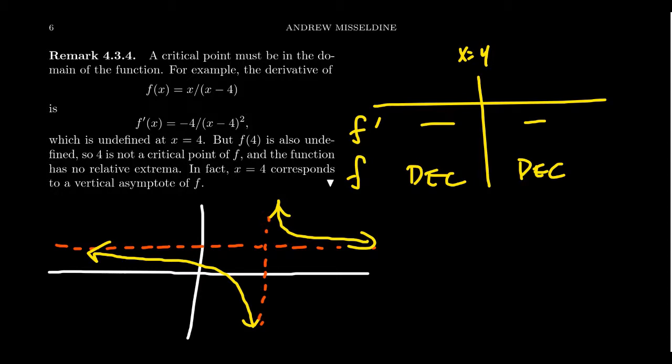But we should still mention that the intervals of increase and decreasing occur from negative infinity to 4, union 4 to infinity, because it's not increasing at 4. And we can do examples like this all over the place.